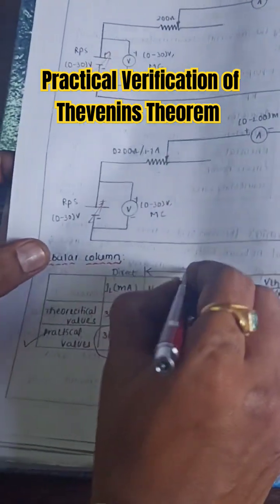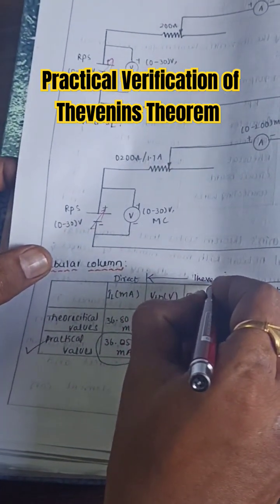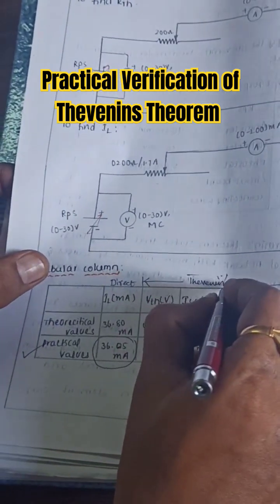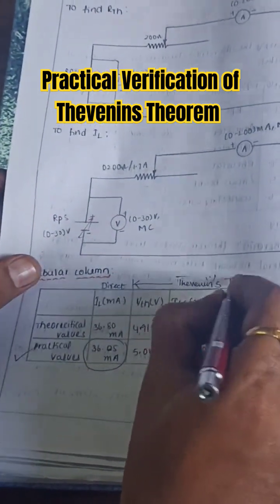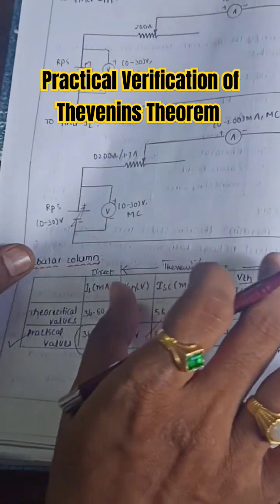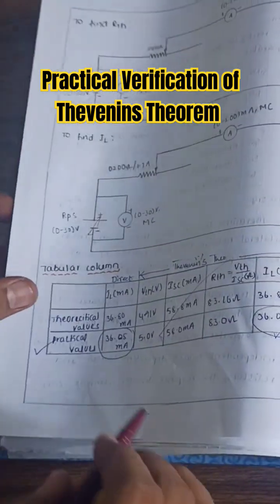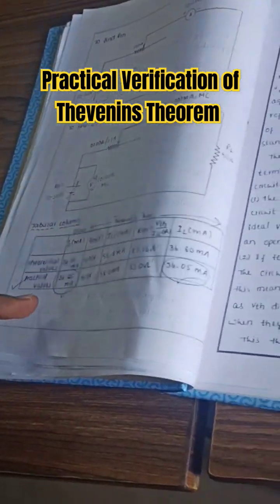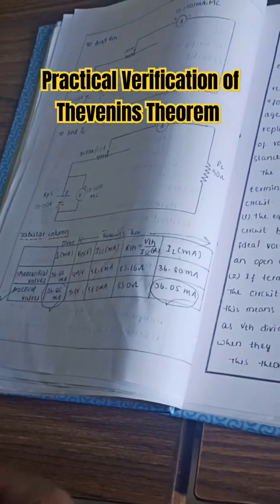This is the procedure to be followed for Thevenin's theorem. These are the values what you have to get by Thevenin's theorem. Directly we got 36 milliamperes.